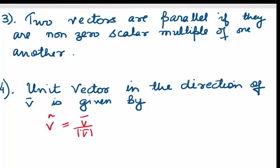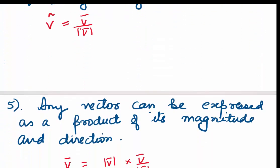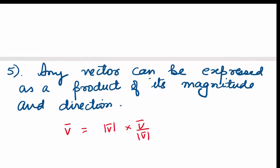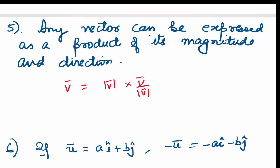Third point: two vectors are parallel if they are non-zero scalar multiples of one another. Fourth point: the unit vector in the direction of v, written with a cap, is nothing but vector v divided by its magnitude. So the unit vector along the direction of v is v divided by the magnitude of v. Fifth point: any vector can be expressed as a product of its magnitude and its direction, where direction is given by the unit vector.